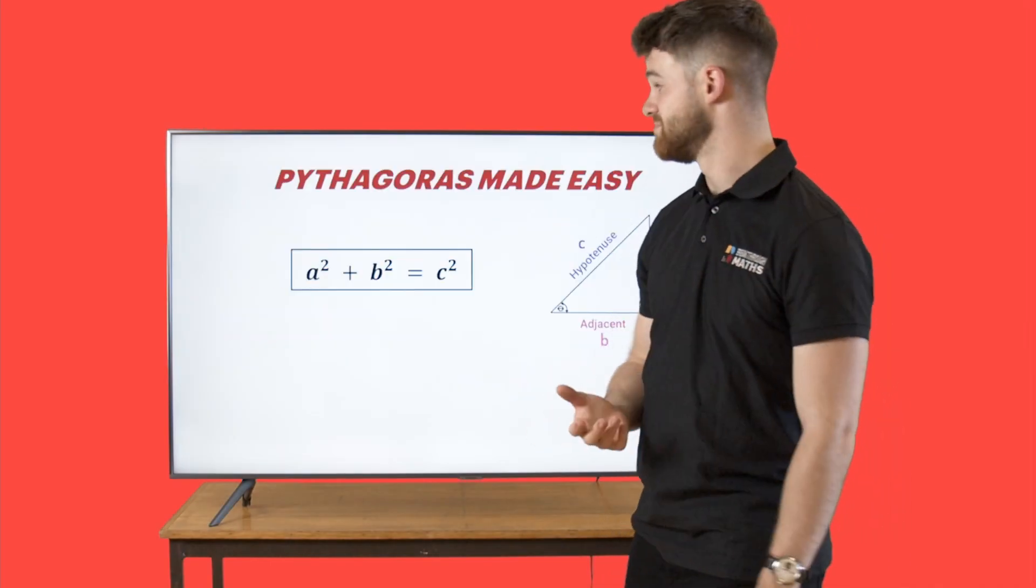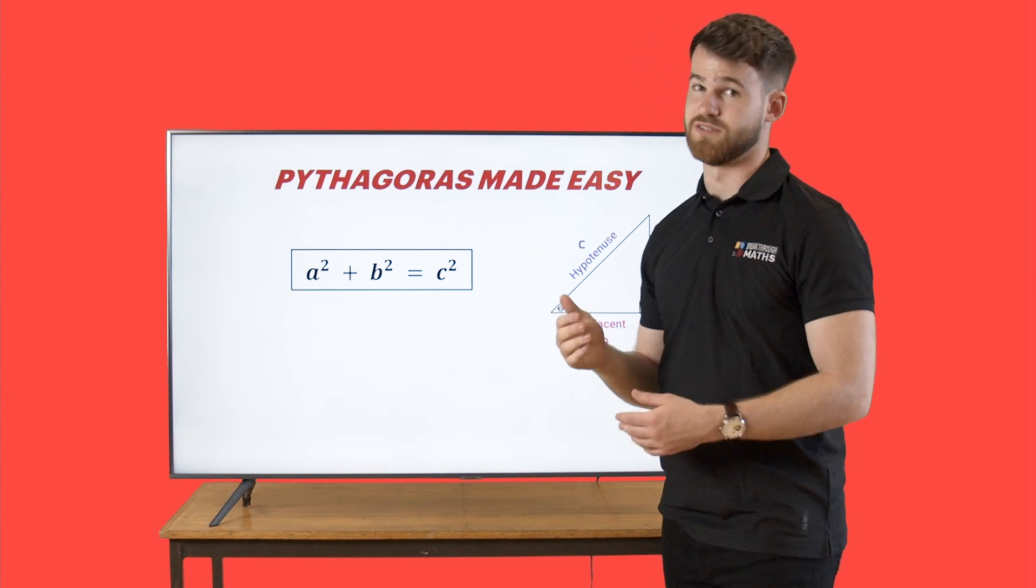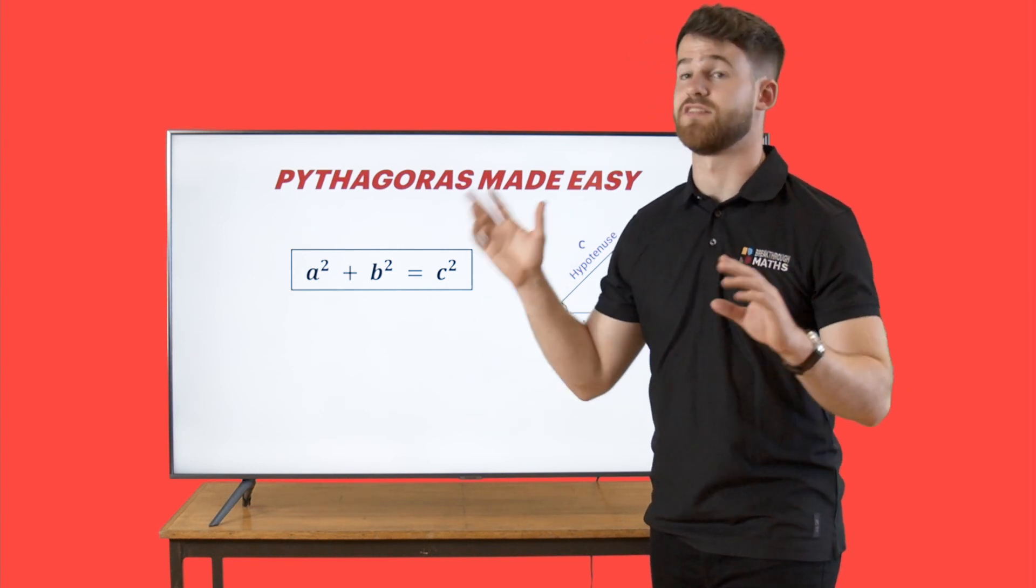Let's look at the theorem here. So a squared plus b squared is equal to c squared. What does this all mean? This is just talking about the sides of the triangle.